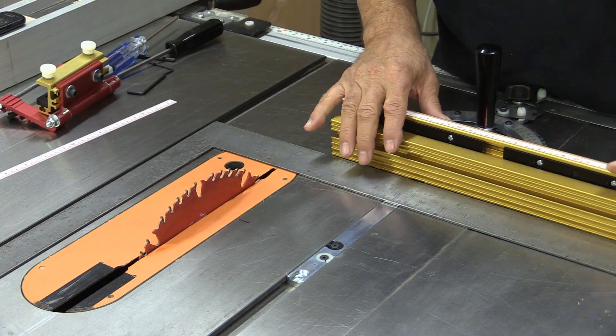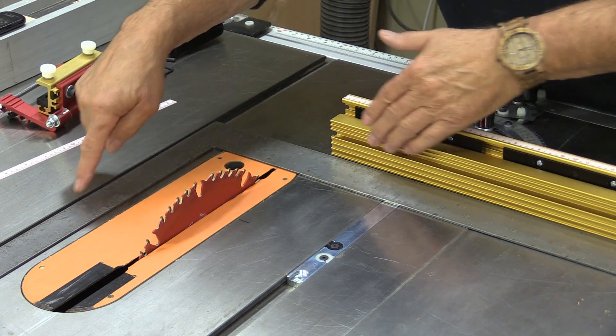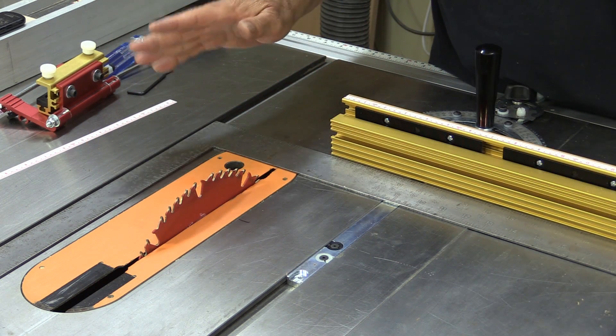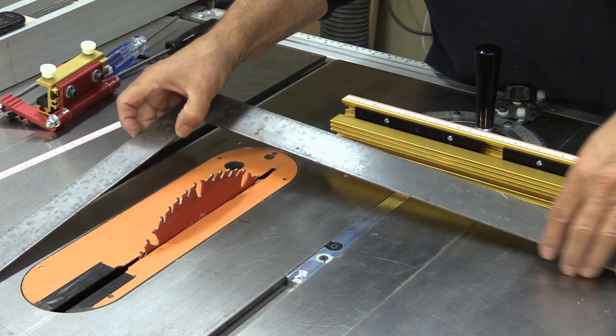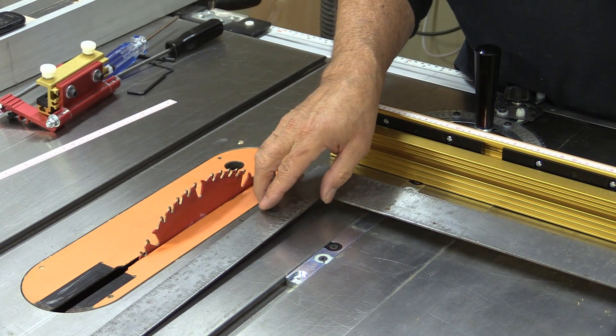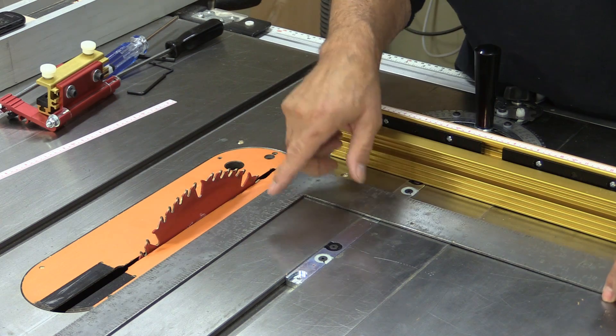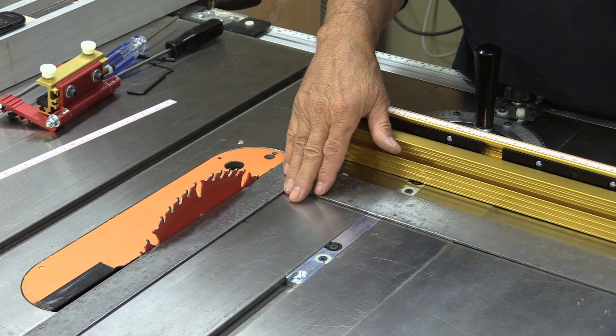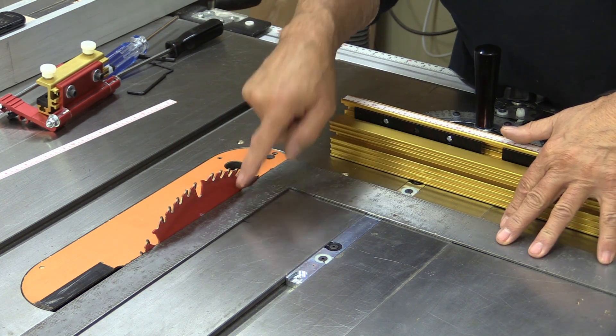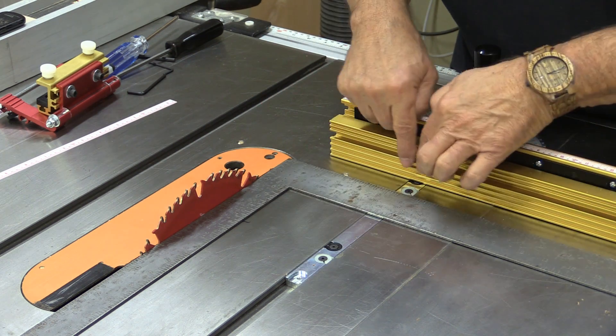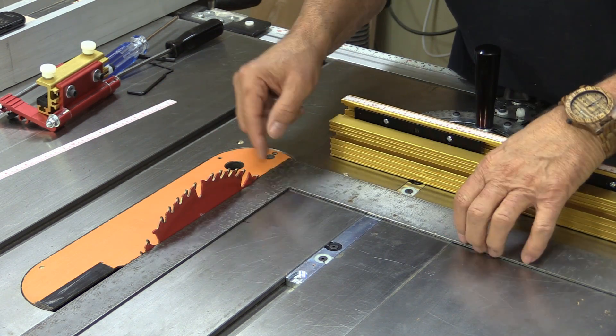The next thing I want to check is they say that this is aligned at 90 degrees at the factory. They say if yours is off you can align it to the blade, and I don't think they actually mean the blade. I never align a miter gauge to a blade.